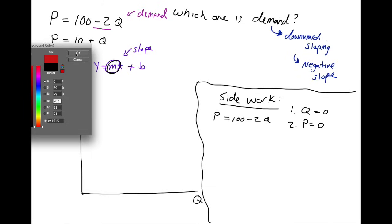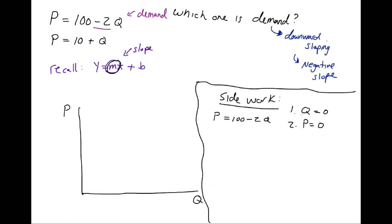We'll start with red. And we'll do when Q equals 0. So that's going to fall somewhere up here on the P-axis.